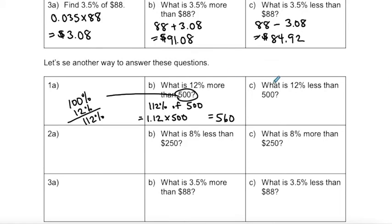Now what happens when I'm finding percent less of? Remember my 500 is still that 100%. And I want to subtract 12%. And 100 subtract 12 is 88. So I want to find 88% of 500. So that's the same as finding 0.88 times 500, which is 440.